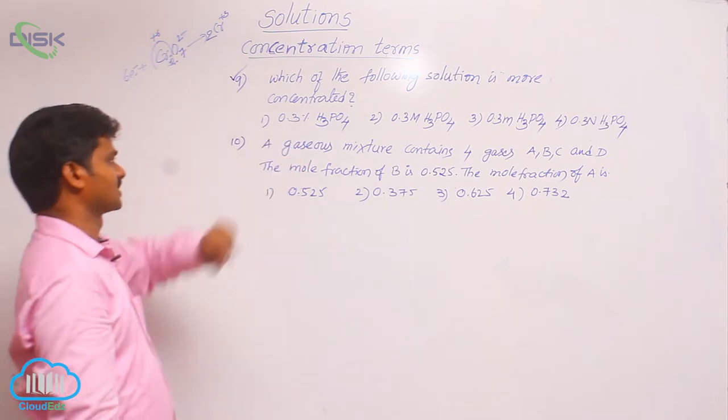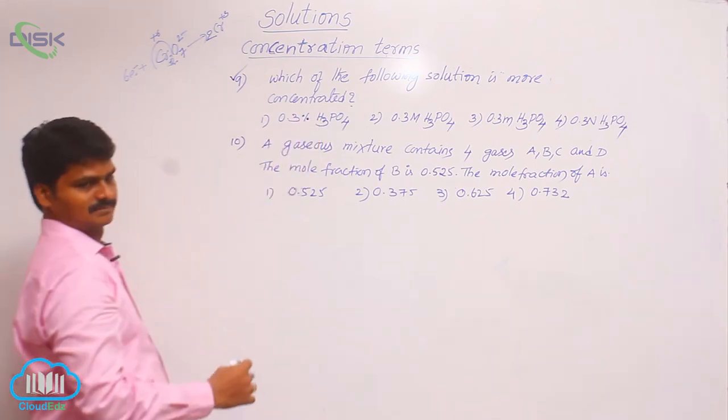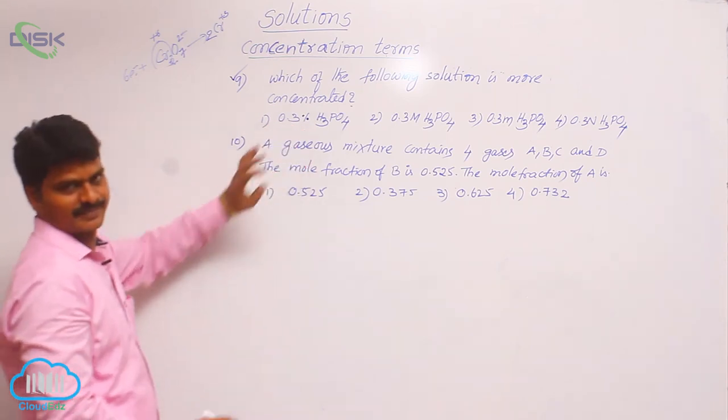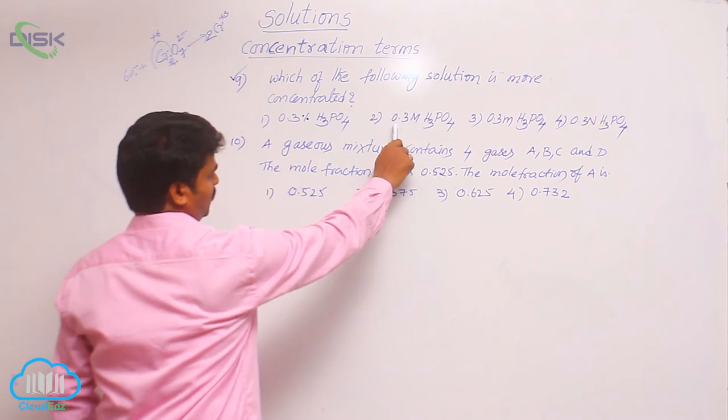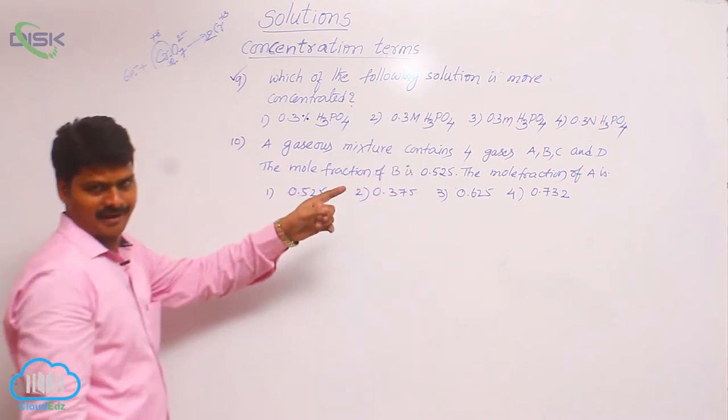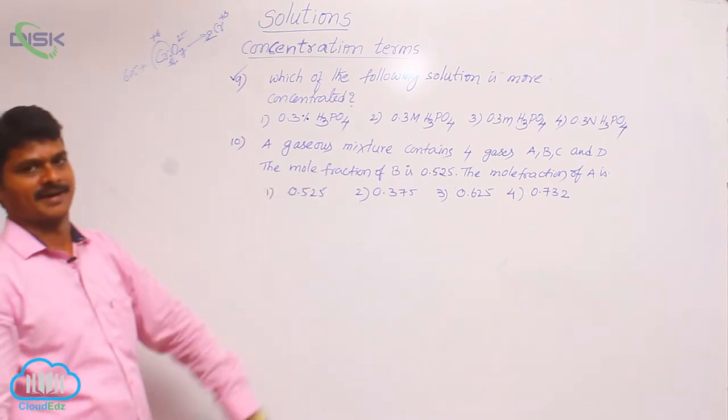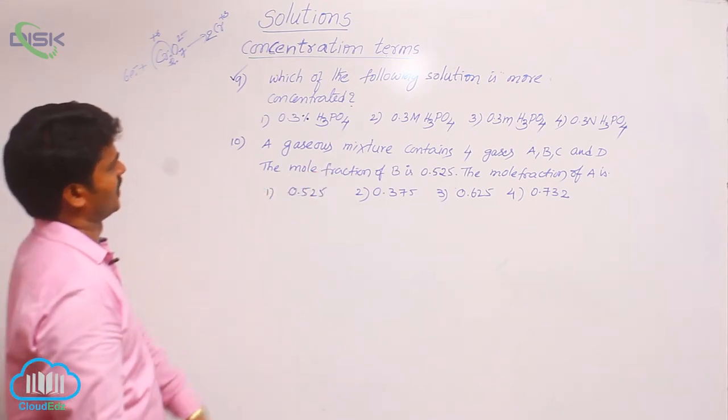In the first option, percentage is given, but weight by volume or weight by weight is not mentioned. In the second option, 0.3 molar, that means molarity. In the third option, molality, and in the fourth option, normality. Different concentration terms are there.